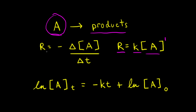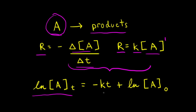We can also write that the rate of the reaction is equal to the negative of the change in the concentration of A over the change in time. By setting both of these equal to each other and by doing some calculus including the concept of integration, we arrive at the integrated rate law for a first-order reaction, which says that the natural log of the concentration of A at some time t is equal to negative kt, where k is the rate constant, plus the natural log of the initial concentration of A.